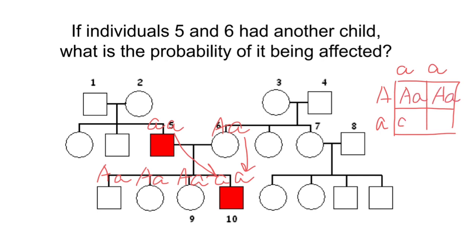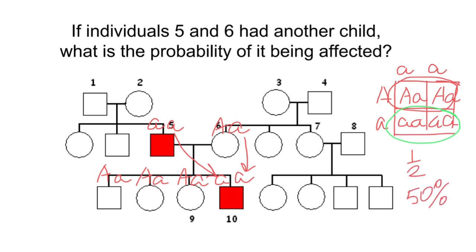Capital A, small a on one side; small a, small a on the other. As you can see, there is a 50% chance that their progeny would be affected with this genetic disorder, and a 50% chance that they would be unaffected. So our answer is one half, or 50% probability, that the next child of this couple is going to be affected.